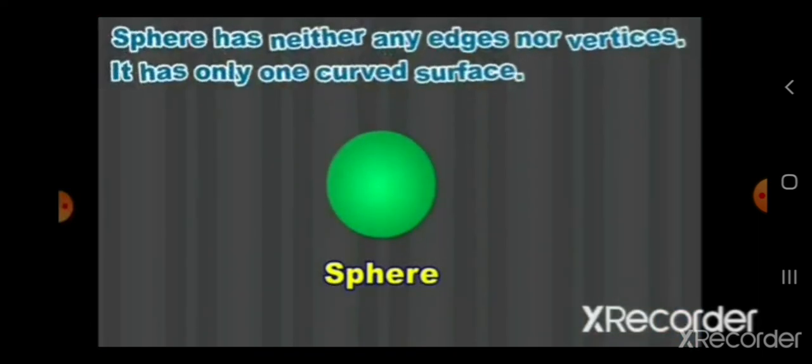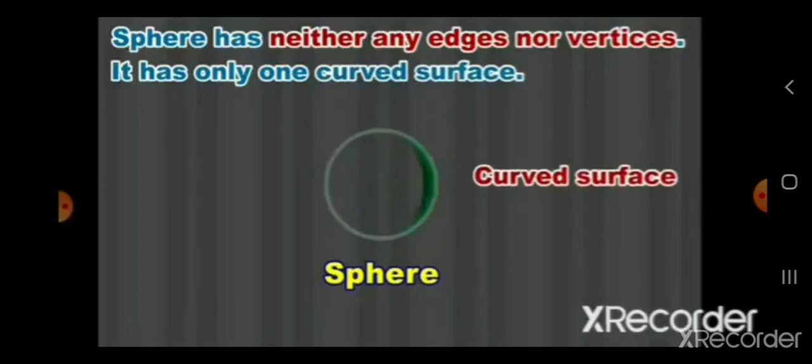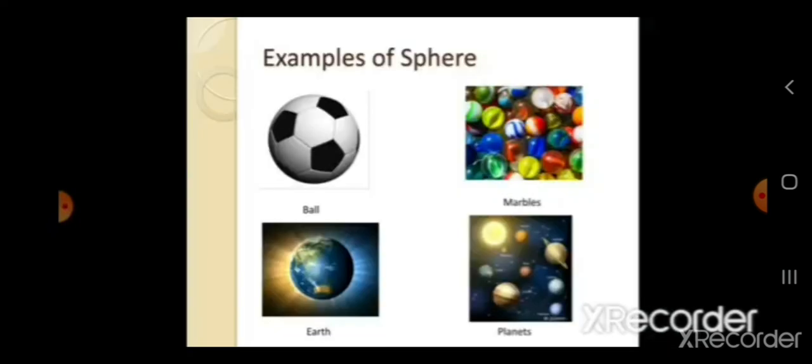The next shape is a sphere. A sphere has neither any edges nor vertices. It has only one curved surface. Can you see in the picture? This, it is curved in shape. So, only curved face. It is having a curved surface.